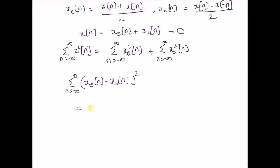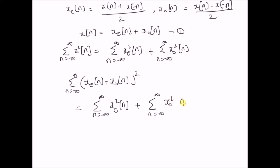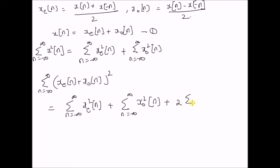By using the expansion (a + b) whole squared, we have the sum n equal to minus infinity to plus infinity of x_e squared of n — the energy of the even component — plus the sum n equal to minus infinity to plus infinity of x_o squared of n — the energy of the odd component — and a cross term, which is plus 2 times the sum n equal to minus infinity to plus infinity of x_e of n times x_o of n, the product of the even component with the odd component.